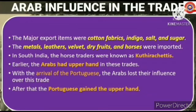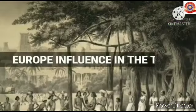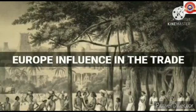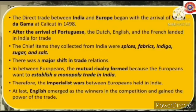With the arrival of the Portuguese, the Arabs lost their influence over this trade. After that, the Portuguese gained the upper hand. Next, European influence in trade: the direct trade between India and Europe began with the arrival of Vasco da Gama at Calicut in 1498.